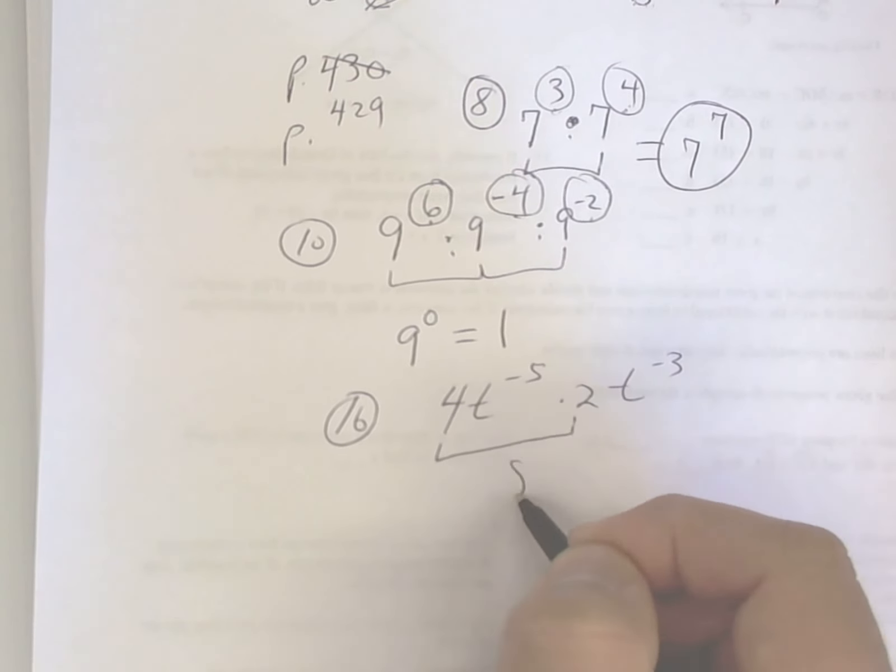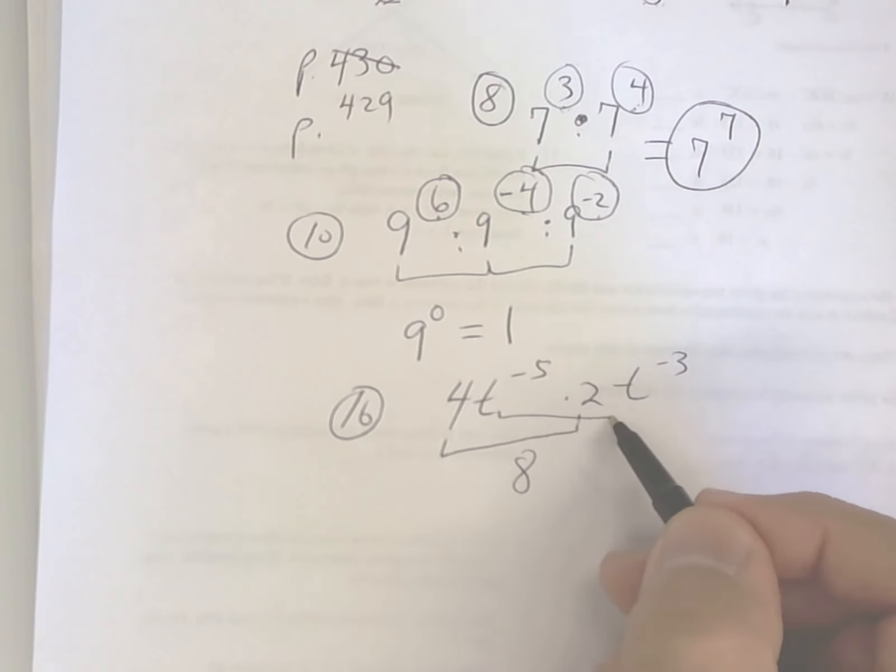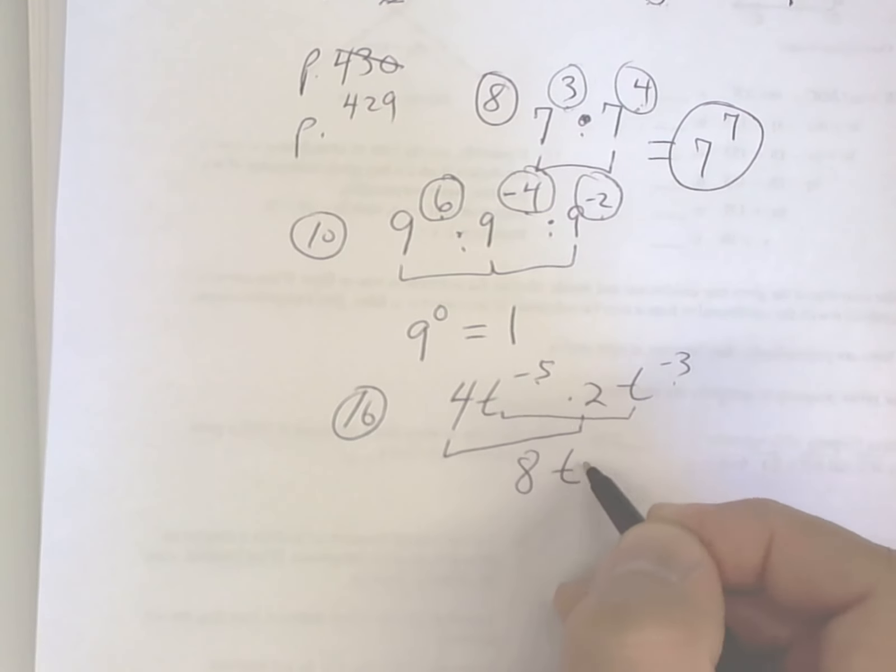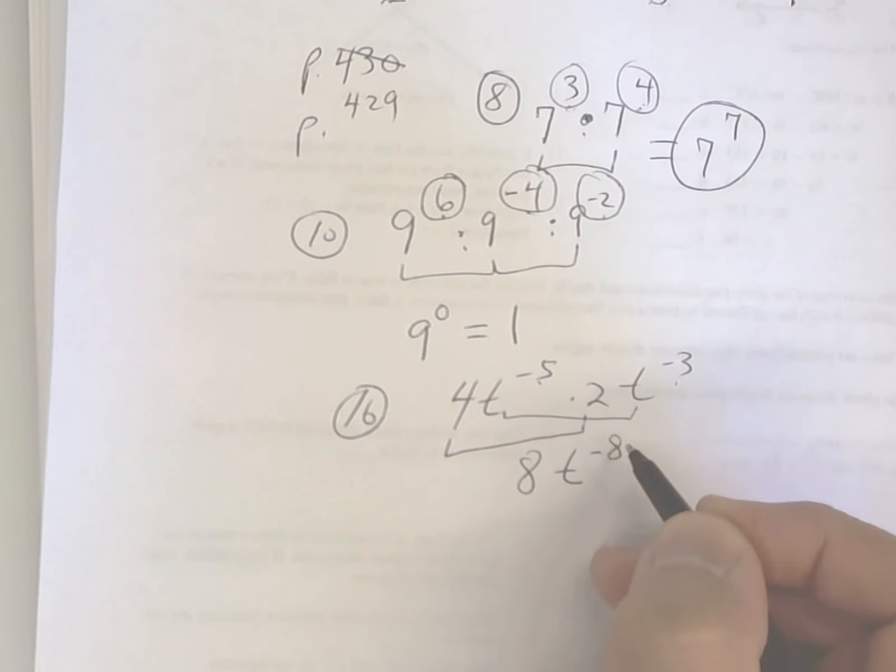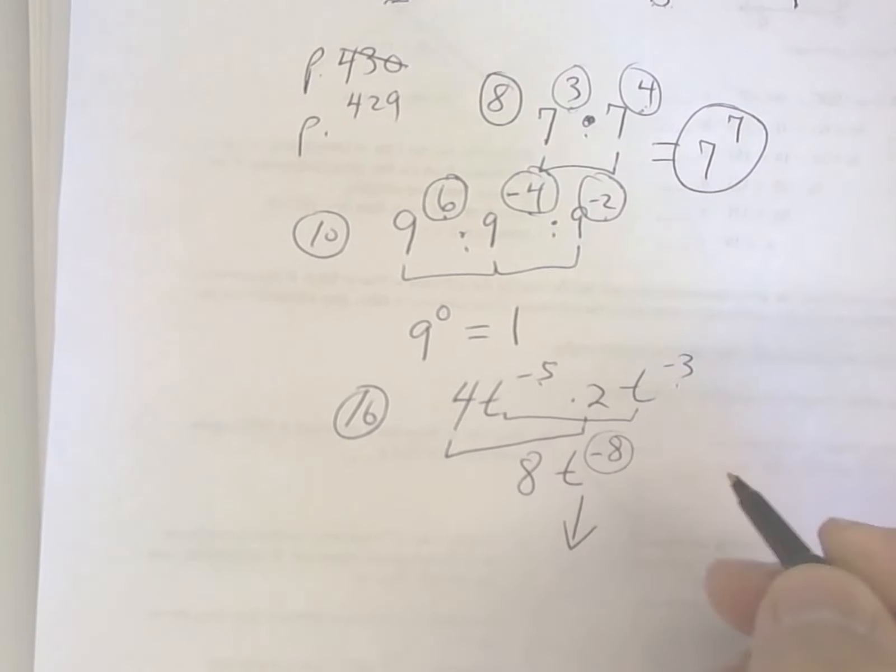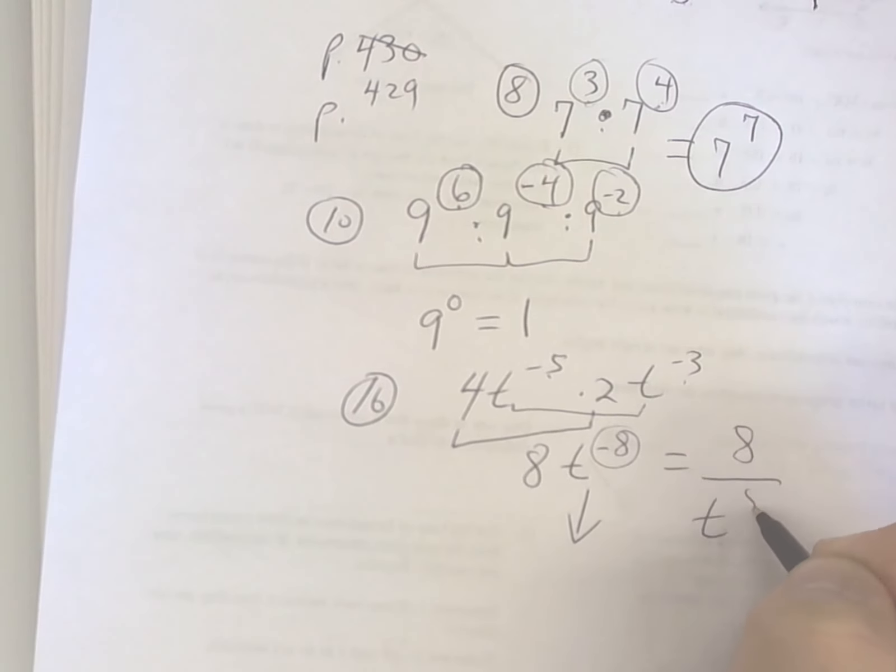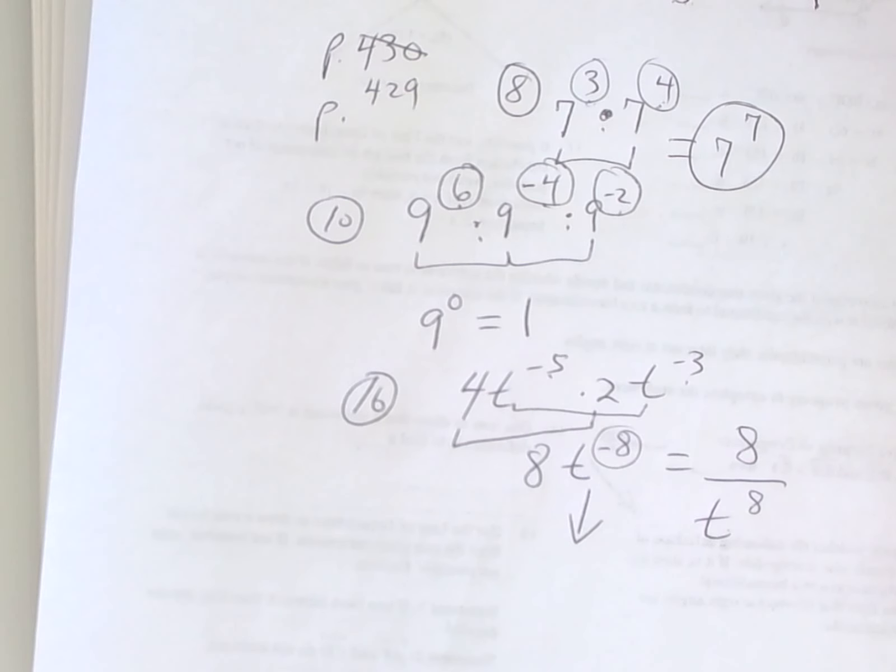2 times 4 is 8. Here you're multiplying and you've got the same base, so you add these up and you get a negative 8. But you can't have a negative, so we're going to drop that down. The 8 stays at the top, so you get t to the 8th power. Does that make sense? Yeah. Okay, what else?